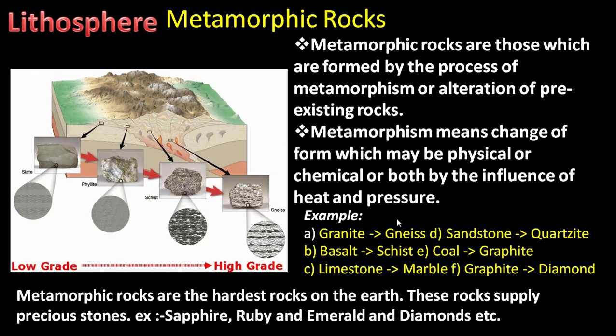So that is it about rocks. In this session, we got the information about the classification of three types of rocks: igneous rocks, sedimentary rocks, and metamorphic rocks — including subtypes such as intrusive and extrusive igneous rocks, and inorganic and organic sedimentary rocks formed mechanically, chemically, and organically. I hope you have understood. If you have any doubts, comment in the comment box and I will solve them. I will come back with the next session. Until then, keep watching my channel. Thank you. Have a nice day. Bye-bye.